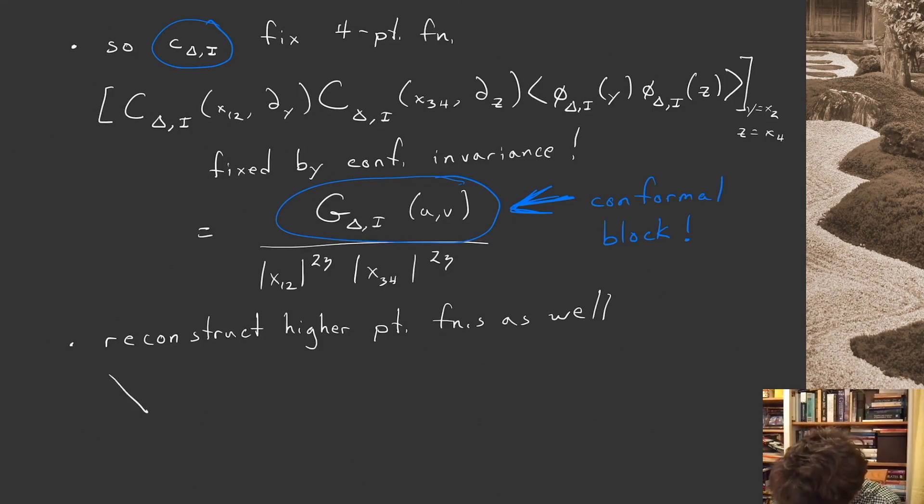In the four-point function case, we can think about pictorially something like this. We have our points x1 and x2, which we're bringing close together, x3 and x4, which we're bringing close together. Our four-point function, we can think about it as some sum over these saw-horse diagrams, where we sum over all the intermediate channels, all the possible values of delta and i that can contribute based on our knowledge of the three-point functions.